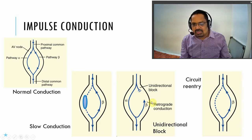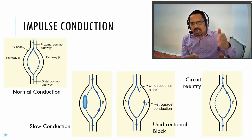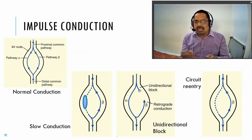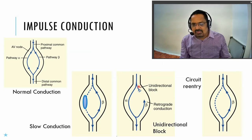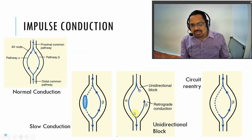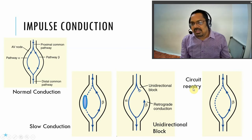When the bounced signal comes back, the normal alpha pathway has already gone ahead, so the returning signal behaves as a second impulse. From the proximal side only one signal is coming, but one goes normally and the one going into the blocked beta path bounces back, and then bounces again — so one signal becomes two or three signals. This is what happens in a unidirectional block.